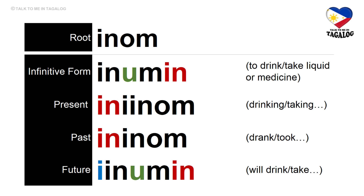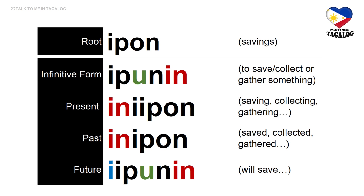Root word: inom. Infinitive form: inumin — meaning to drink or to take liquid or medicine. Present tense: iniinom — drinking or taking liquid or medicine. Past tense: ininom — drank or took liquid or medicine. Future tense: iinumin — will drink or will take liquid or medicine.